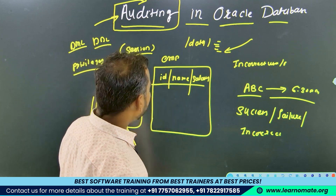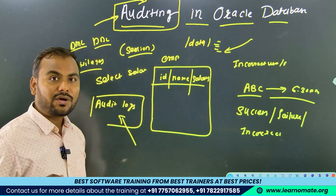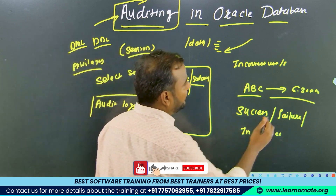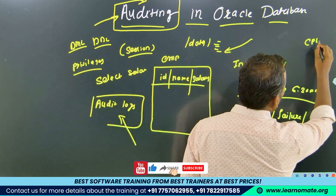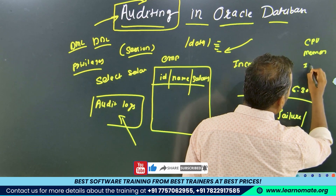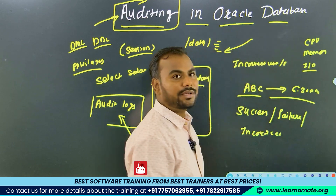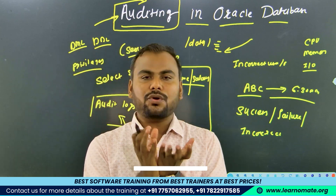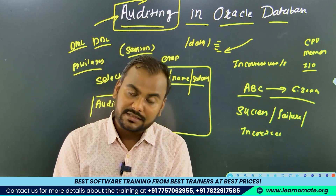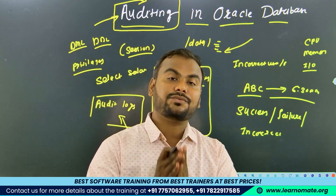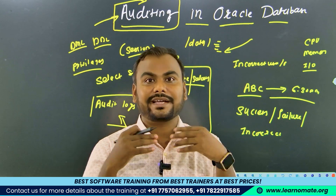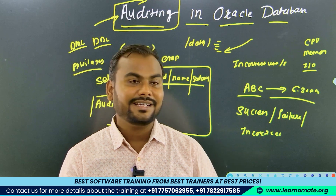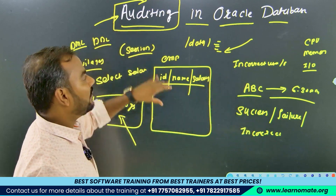The second reason is that auditing creates extra overhead for the Oracle database. When auditing is enabled, resources like CPU, memory, and I/O performance will be degraded. So we try to configure auditing only on databases where critical applications are hosted and where you need to know which user is doing what — in that case we enable auditing.